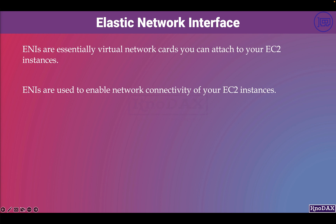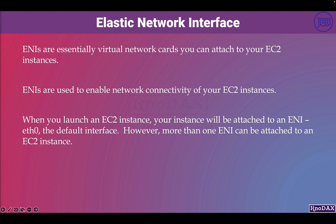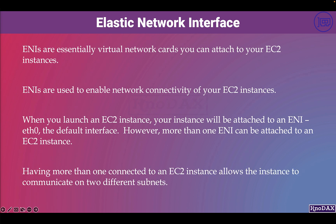When you launch an EC2 instance, your instance will be attached to an ENI, ETH0, which is the default interface. However, more than one ENI can be attached to an EC2 instance. Having more than one connected to an EC2 instance allows the instance to communicate on two different subnets.